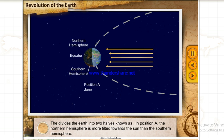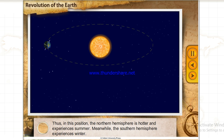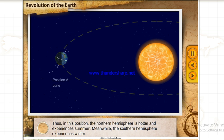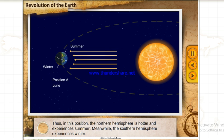In position A, the northern hemisphere is more tilted towards the Sun than the southern hemisphere. Thus, in this position, the northern hemisphere is hotter and experiences summer. Meanwhile, the southern hemisphere experiences winter.